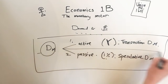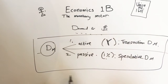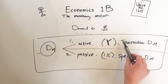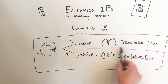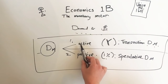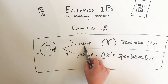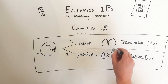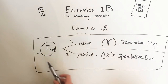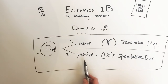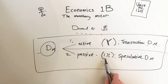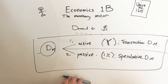The demand for money depends on two things: the transaction demand for money, which is the demand for active balances and depends on income level; and the demand for passive balances, which is the speculative demand for money and depends on the interest rate. You can just memorize that.